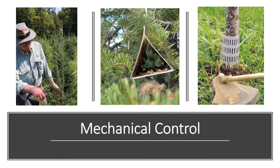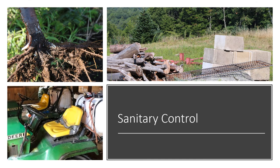Physical barriers are used to protect specific plants from pests. Examples include electric fencing to keep deer or other animals out and tree guards to prevent vole damage. Sanitary control includes methods to avoid introducing a pest into a location.